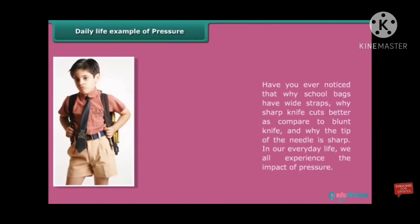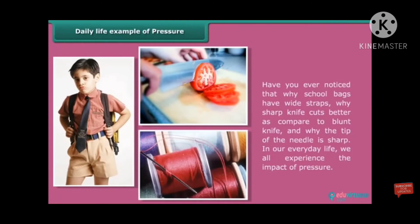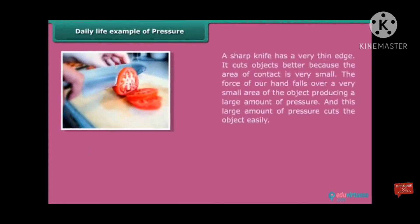Next, daily life examples. You have ever noticed why school bags have wide straps, why sharp knife cuts better as compared to blunt knife, and why the tip of the needle is sharp? A school bag has wide straps so that the weight of the bag may fall over a large area of the shoulder of children, thus resulting in less pressure on the shoulders. And due to less pressure, it is quite comfortable to carry the bag.